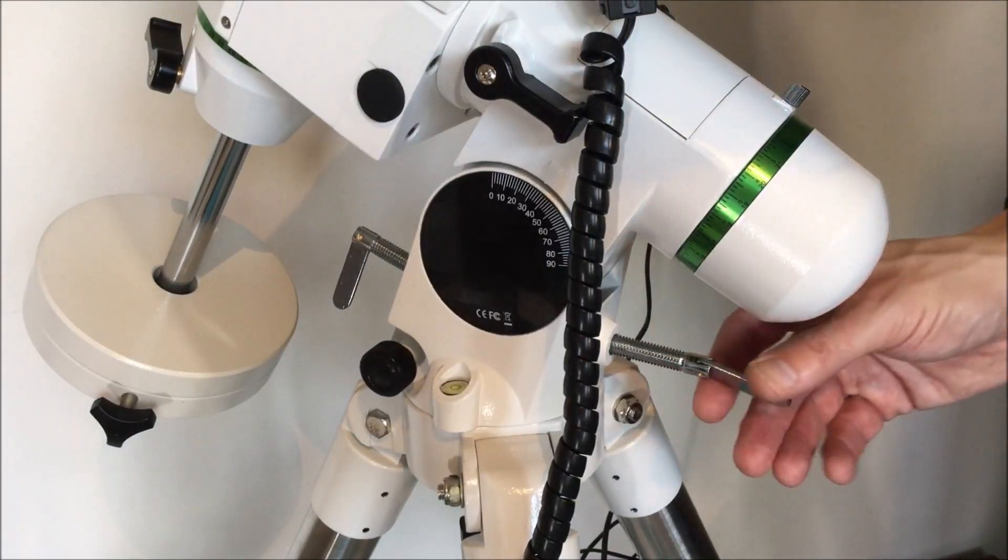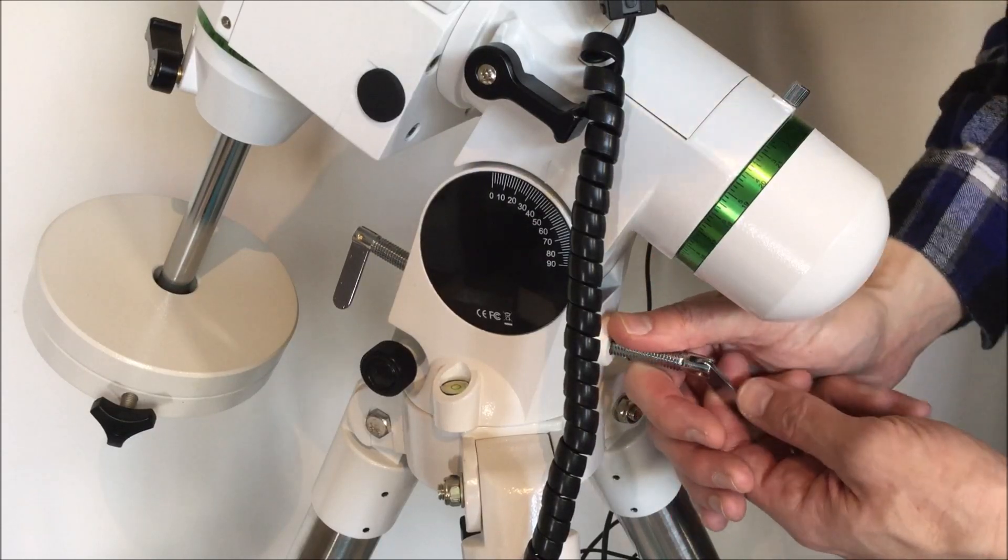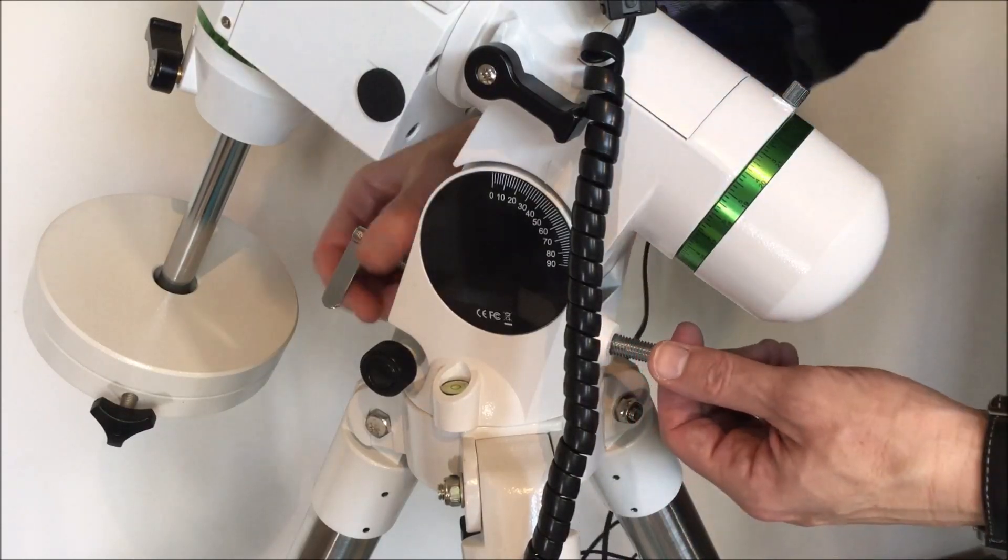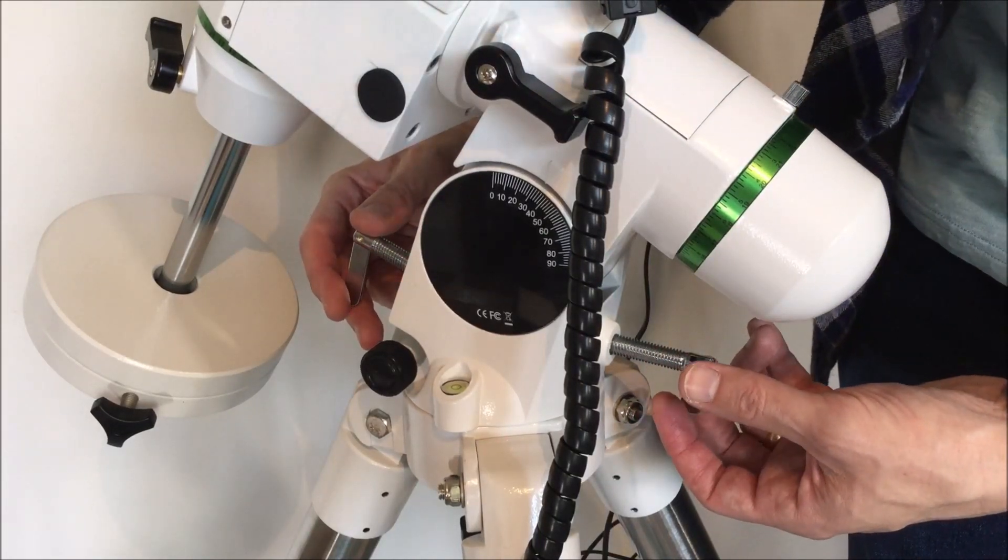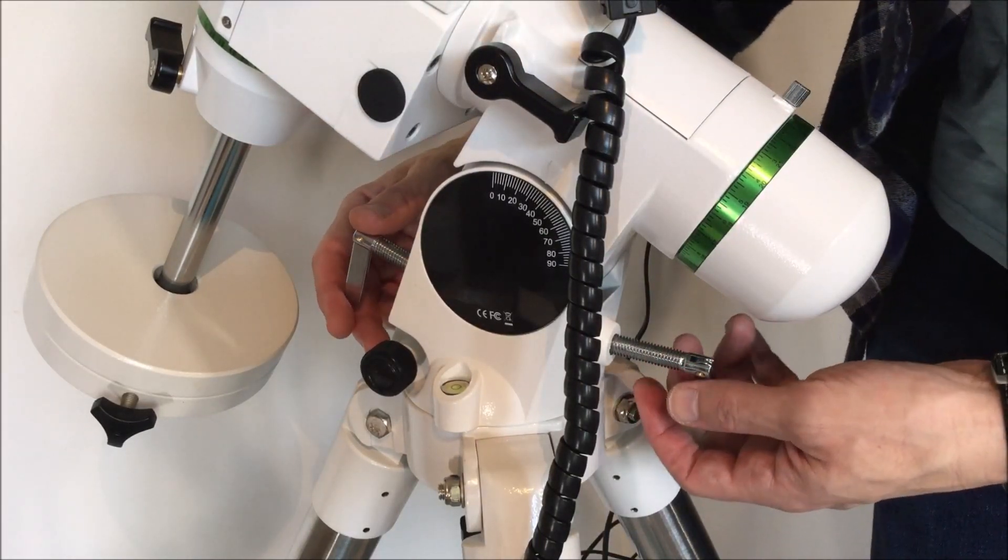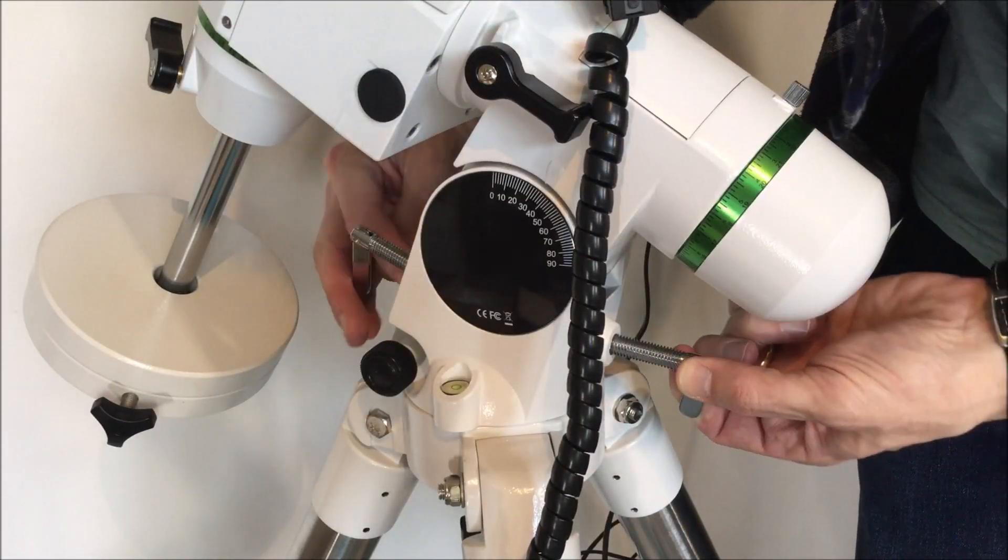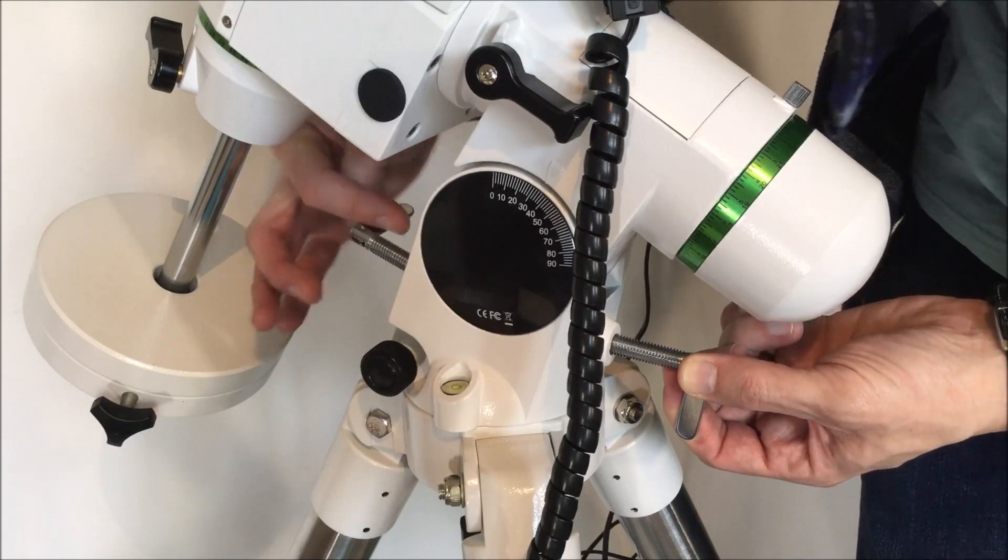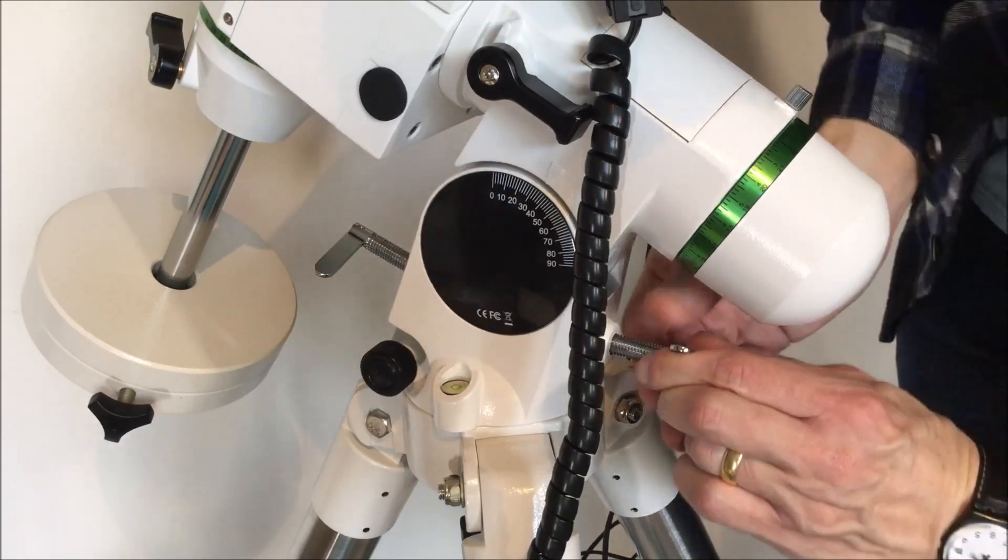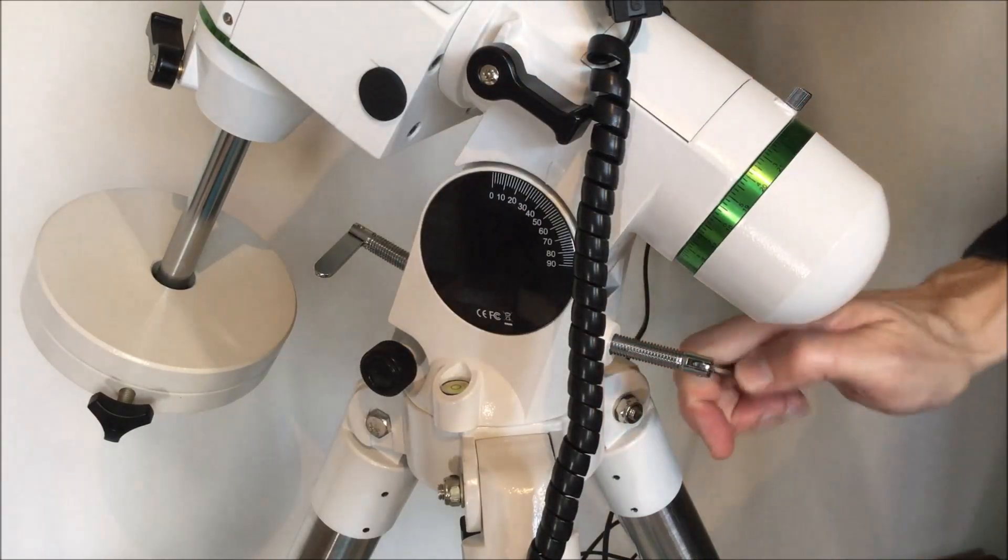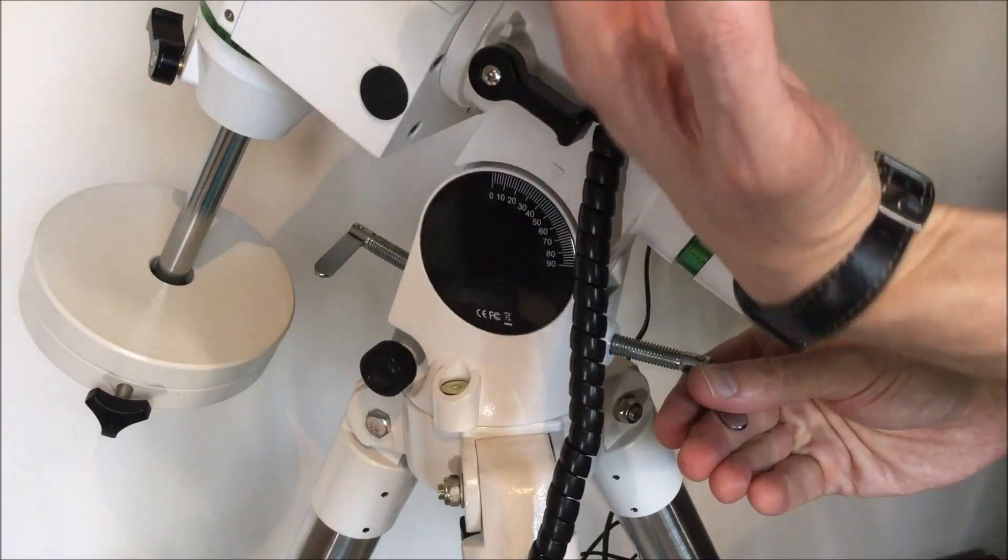So now I've threaded in the two bolts that came with the mount. So one here into the back of the mount and another one here on the front. Basically the purpose of these two bolts is to allow us to adjust the angle of the polar axis of the mount. So they act in a kind of push-pull arrangement. If I loosen off this bolt here and then turn this one, you can see that the angle of the mount is increasing.